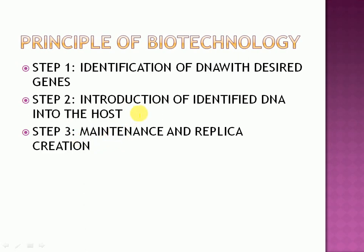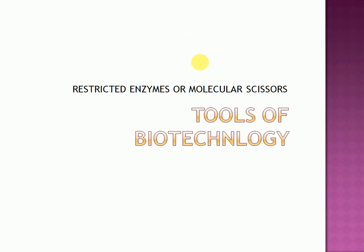For example, if insulin has to be made, then E. coli will be used for replication purposes. For identification of DNA with desired genes, we need to identify a DNA which has particular genes required for a particular gene therapy. After identification, that segment has to be removed, which is done with the help of molecular scissors — covered under the tools of biotechnology.